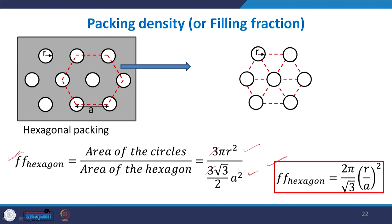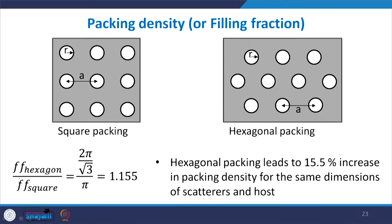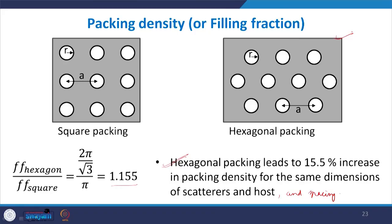Comparing the two filling fractions: the filling fraction of hexagonal packing is approximately 1.155 times that of square packing, meaning hexagonal packing leads to a 15.5% increase in packing density for the same scatterer dimensions and spacing. That is why hexagonal packing is preferred for arranging two-dimensional sonic crystals. This is illustrated by the Miyashita et al. 2003 paper, which showed both square and hexagonal arrangements of aluminum rods.